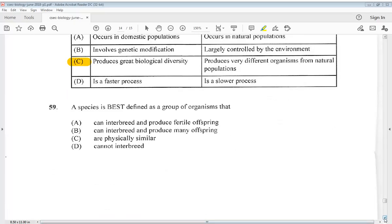Question 59 says, a species is best defined as a group of organisms that: A. Can interbreed and produce fertile offspring. B. Can interbreed and produce many offspring. C. Are physically similar. D. Cannot interbreed. So we know it is A, can interbreed and produce fertile offspring.